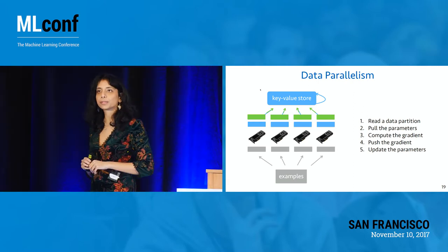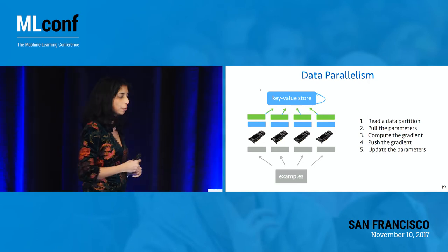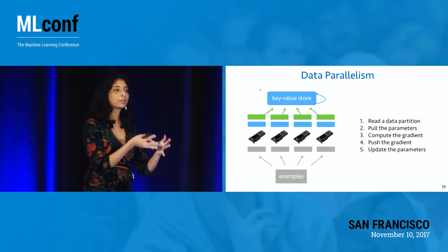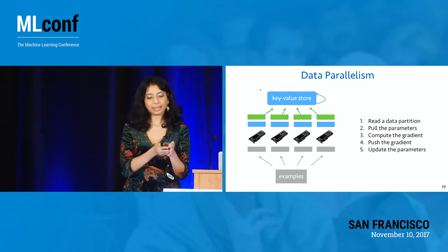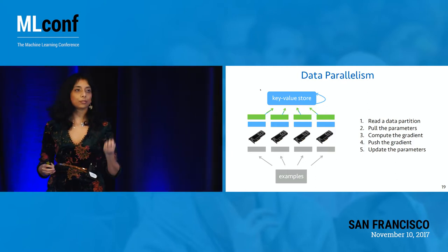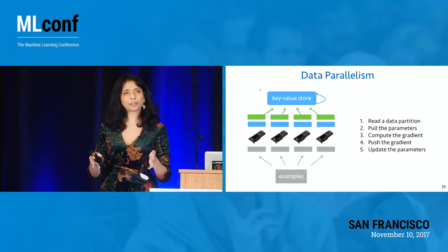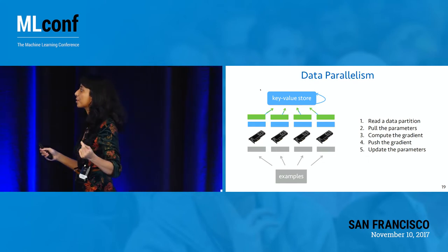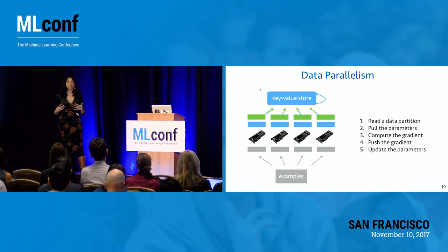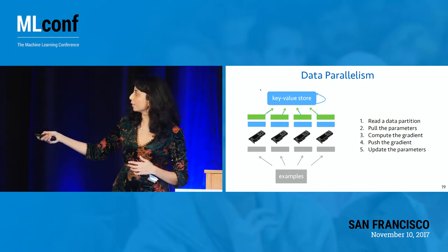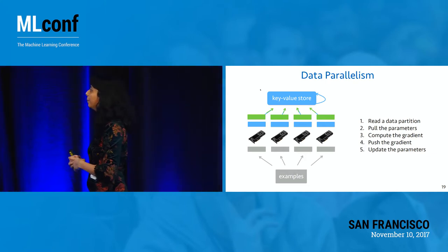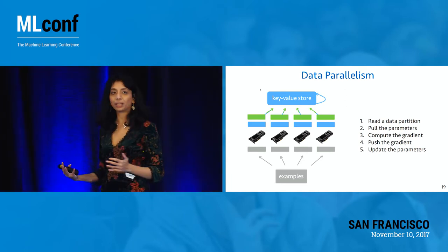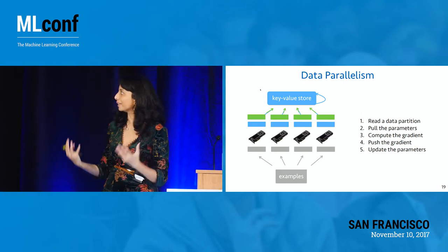MXNet also supports an efficient parameter server. In data parallelism, you take your big batch of data and divide it into each of the machines, so each machine has its own mini-batch to process. After processing, each GPU computes its own gradient and pushes it to the central server — a key-value store — which aggregates it and pushes it back to each GPU. This iterative operation at the end of each mini-batch makes it communication-heavy and different from traditional map-reduce operations that were meant to run only once.